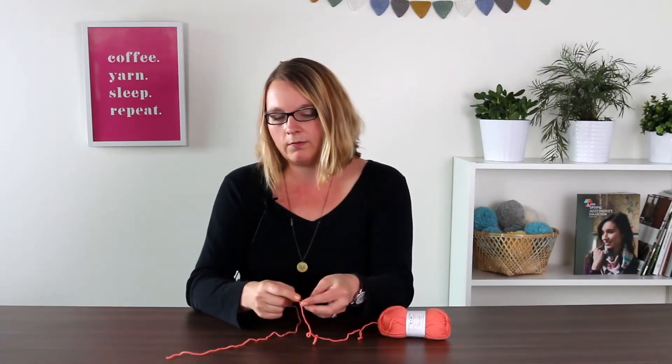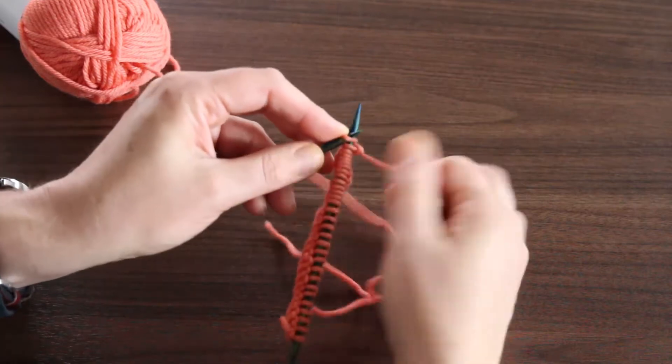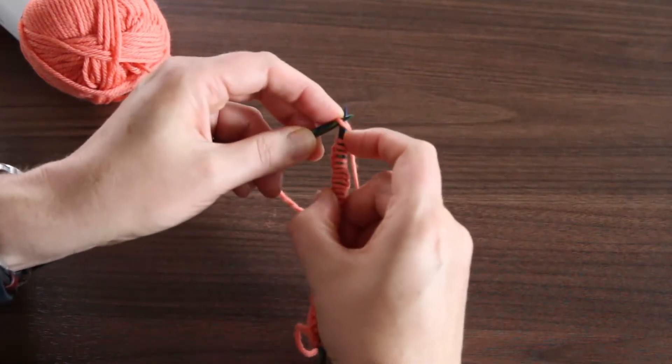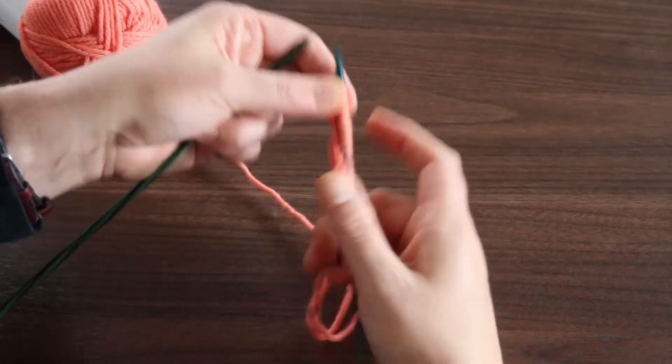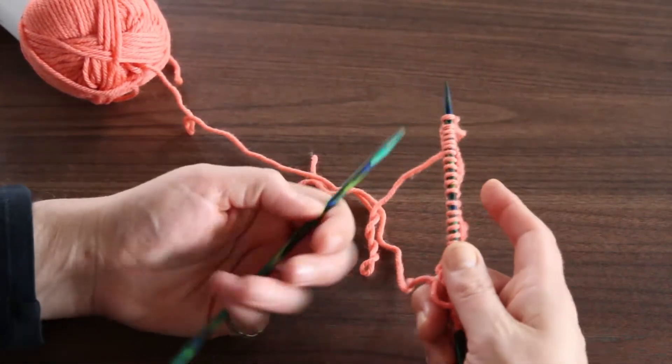Okay, so we're almost at the end of the row. Let's go ahead and finish that up. And there we go. So now all of your stitches are on your right-hand needle, and we're going to switch sides.